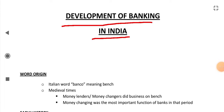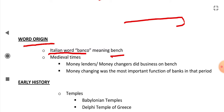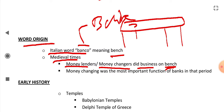Development of Banking in India. First we will see the origin of the word Bank. The word Bank came from the Italian word 'Banco' which means Bench — like the benches we have in schools. In medieval times, the money lenders and money changers did their business on benches, and in Italian a bench is called 'Banco'. From that, Banco, the word became Bank. Money changing was the most important function of banks in that period.